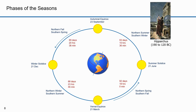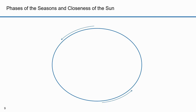Hipparchus measured the time between the equinoxes and solstices. So let's now put this in heliocentric terms. We are going to exaggerate the eccentricity of the earth's orbit so this is clear. The sun appears offset slightly, and Hipparchus figured that out.